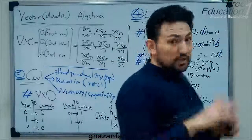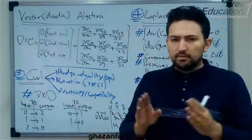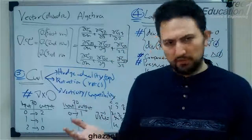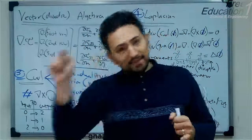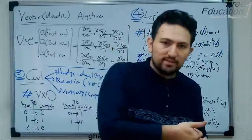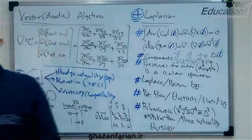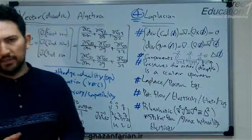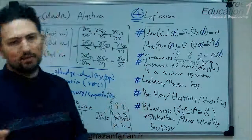Pay attention that, generally, the components of the Laplacian of a vector are not equal to the Laplacian of the components of that vector. This statement is only true for Cartesian coordinates. In cylindrical, polar, spherical, or any other curvilinear coordinate systems, the components of the Laplacian are not equal to the Laplacian of the components.